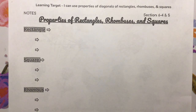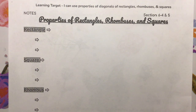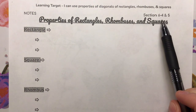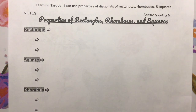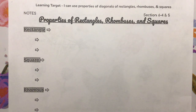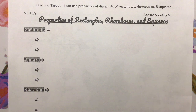Hello, geometry students. I hope that everybody is doing well today. We are continuing in Chapter 6, and we have combined sections 6-4 and 6-5 together in one section of notes. What I'd like for you to be able to do by the end of this video is to use properties of diagonals of rectangles, rhombuses, and squares.